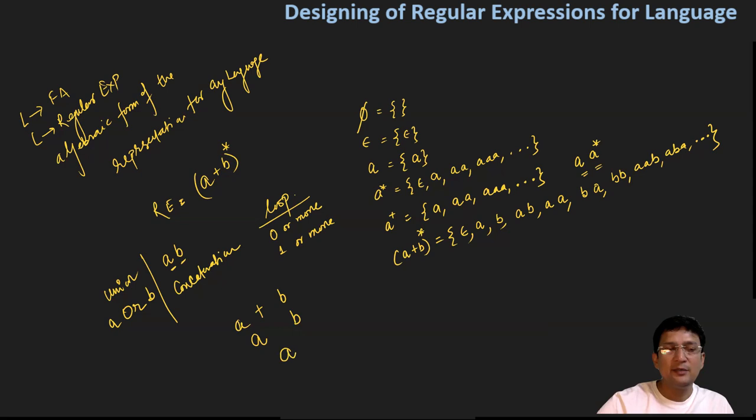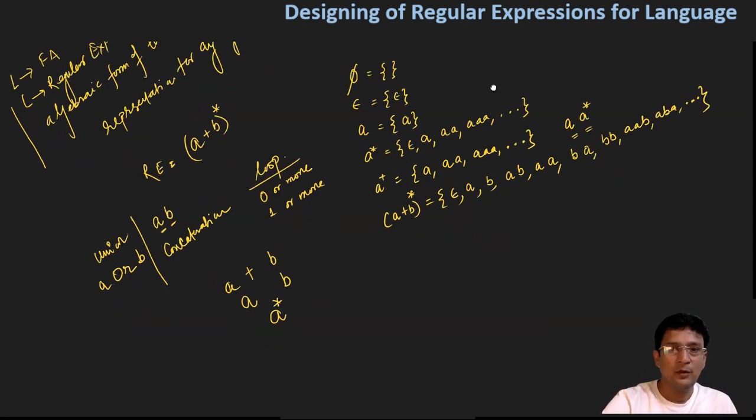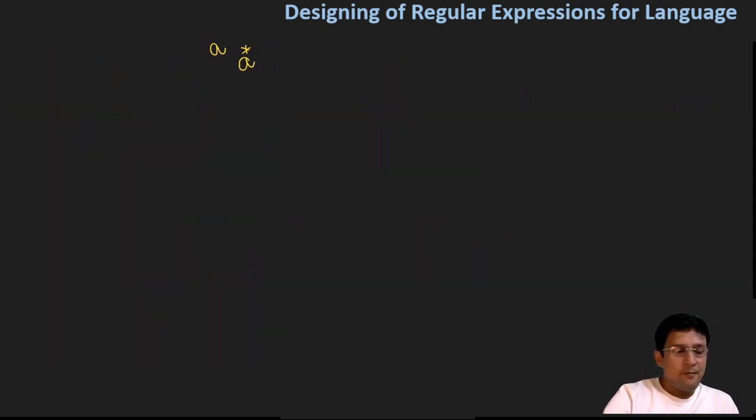If A is the regular expression, then A star, the Kleene closure of A, will also be a regular expression. Once again, what is the regular expression? This is the algebraic form of representation of any language, a very simple form of representation that we can construct with regular expressions.